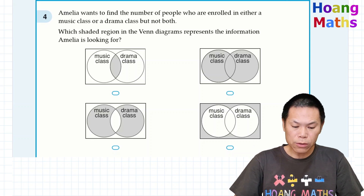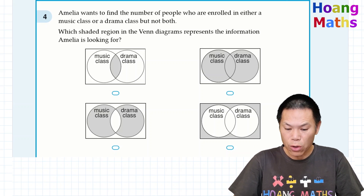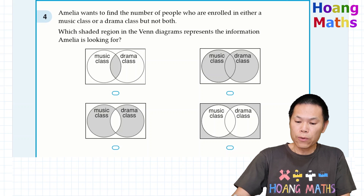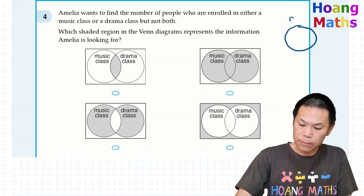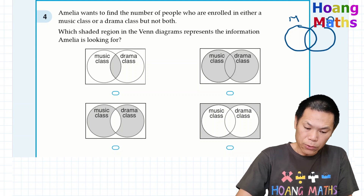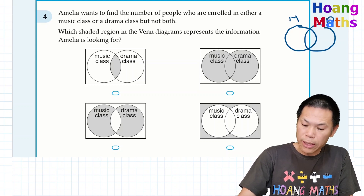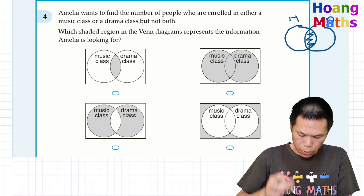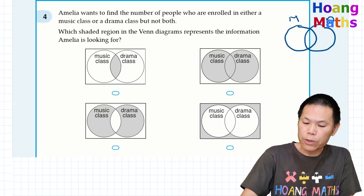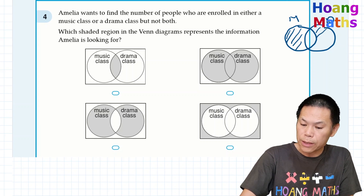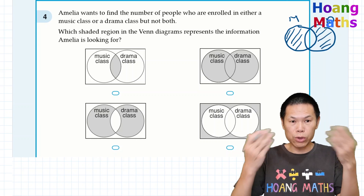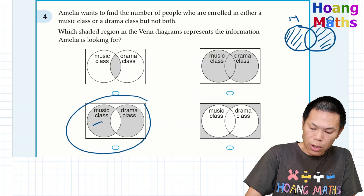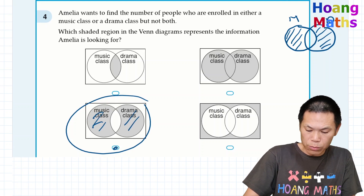Next one: Amelia wants to find the number of people enrolled in either a music class or a drama class, but not both. We can draw music and drama as a Venn diagram. She only wants either music or drama, but not both — so the intersection represents both, which we exclude. We highlight music only and drama only. So the answer is the region showing music only and drama only.